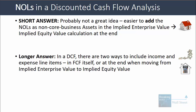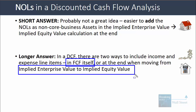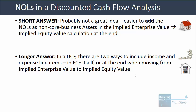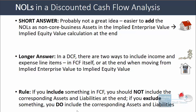Remember that in a DCF, you can reflect income and expenses in two different ways. You can either reflect them within the free cash flow itself, or you can include the corresponding assets and liabilities at the end when moving from implied enterprise value to implied equity value. So if you include something in free cash flow, you should not include the corresponding assets and liabilities at the end. And if you exclude something, you do include the corresponding assets and liabilities at the end.